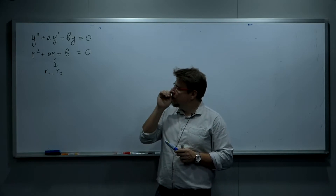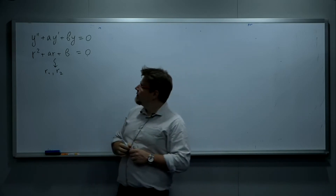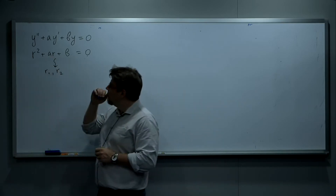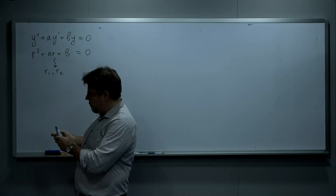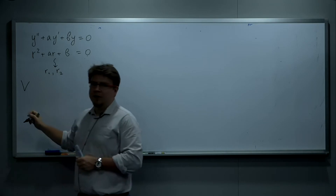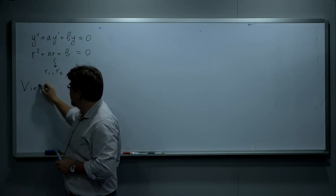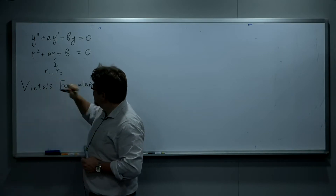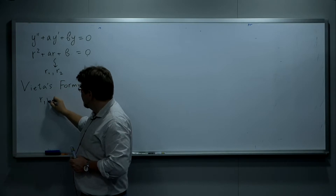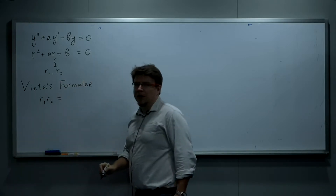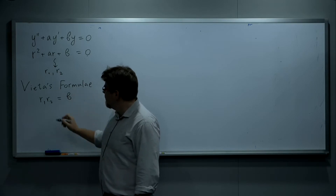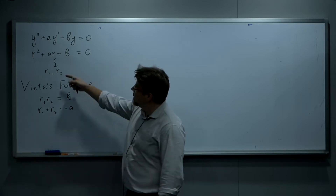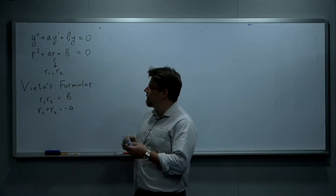Let me explain what it has to do with a and b being positive or negative. Recall the following basic theorem from secondary school, called Vieta's formulas: the product of the two roots of the quadratic equation equals b, the constant term, and the sum of the two roots equals negative a — that is, minus the coefficient at R.